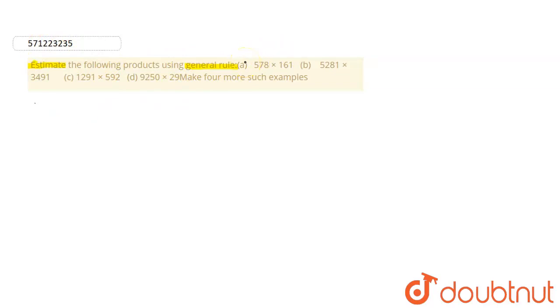To estimate the products, we have to follow two simple steps only. The first step is to round off these values, the values which have to be multiplied. And in the second step, we have to multiply those values and give the estimated product.